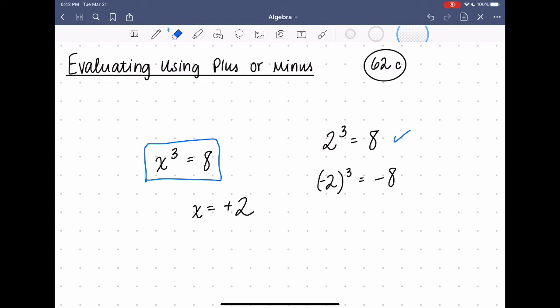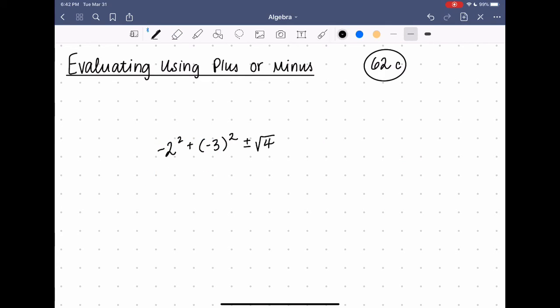Now let's try evaluating an equation with the plus or minus in it. The question would look something like this: negative 2 squared plus negative 3 squared plus or minus the square root of 4. The first term, the negative's on the outside, so I don't square it with the 2. This one would become negative 4.